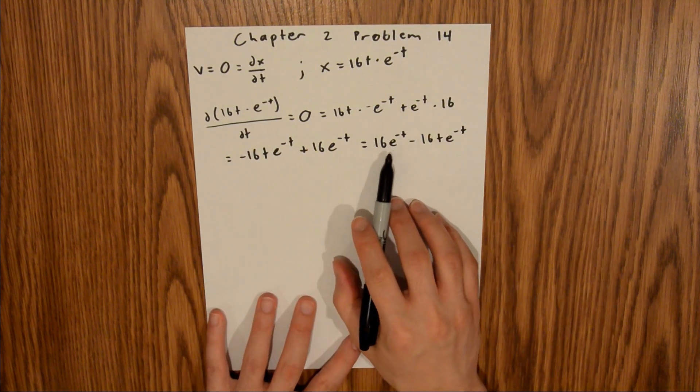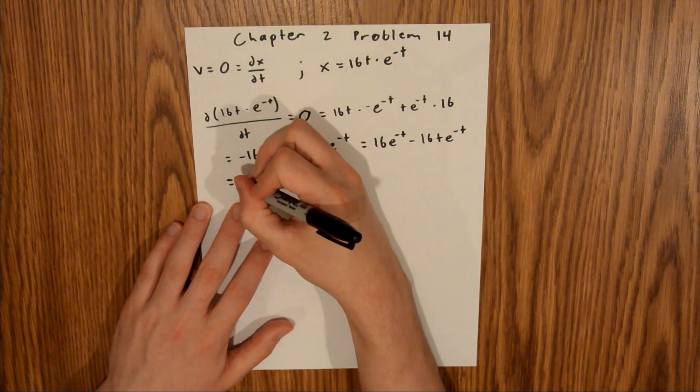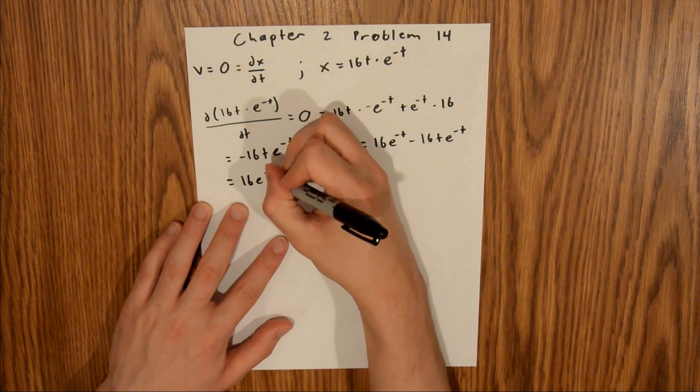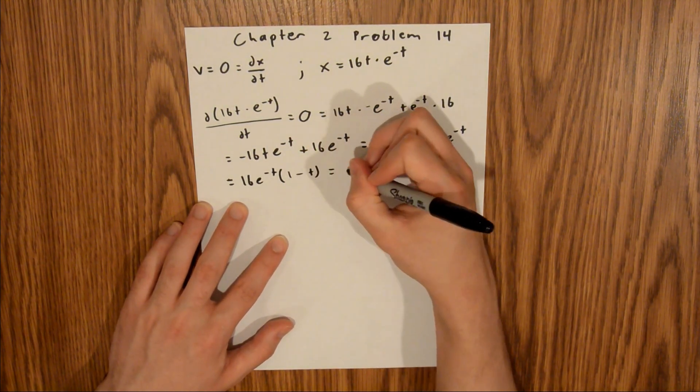So now if we take out 16e to the negative t in both of these terms, that'll leave us with 16e to the negative t times 1 minus t, and this is equal to 0.